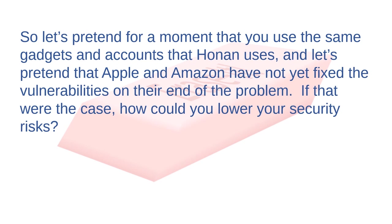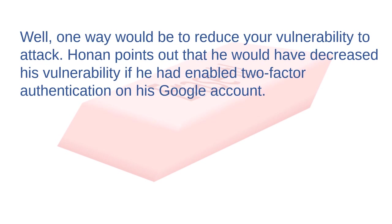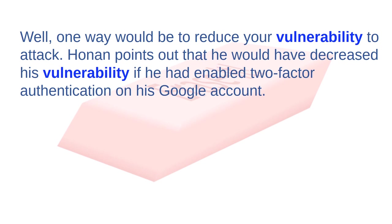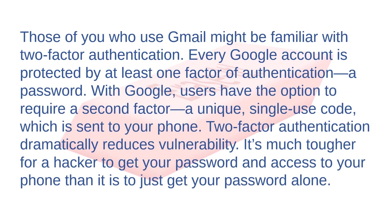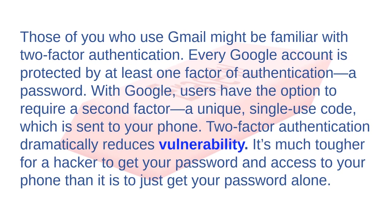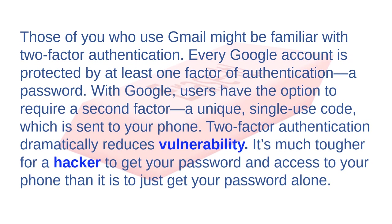Let's pretend you use the same gadgets and accounts that Honan uses, and that Apple and Amazon have not yet fixed the vulnerabilities on their end. How could you lower your security risks? One way would be to reduce your vulnerability to attack. Honan points out that he would have decreased his vulnerability if he had enabled two-factor authentication on his Google account. Two-factor authentication requires a password plus a unique single-use code sent to your phone. It's much tougher for a hacker to get both your password and access your phone than just your password alone.